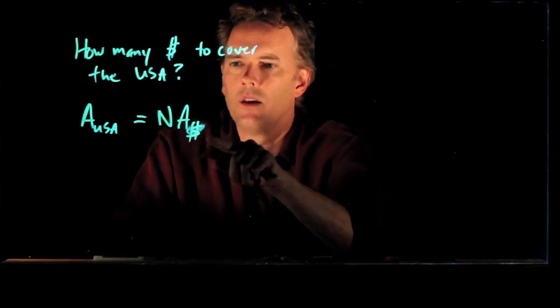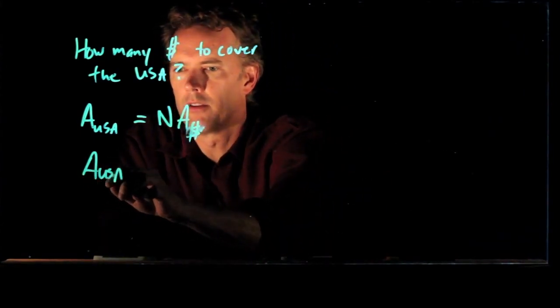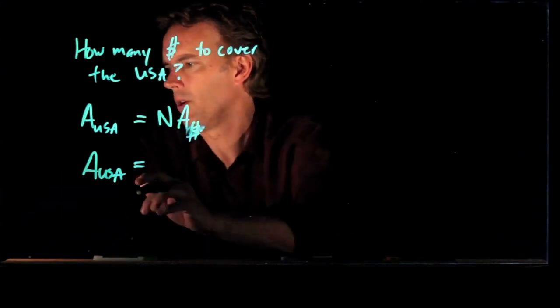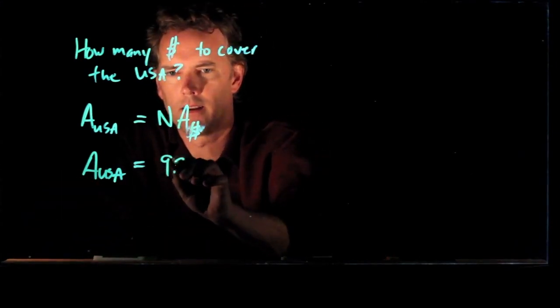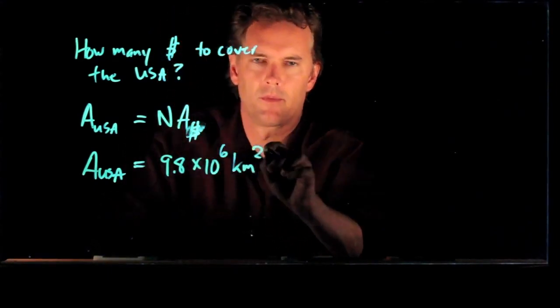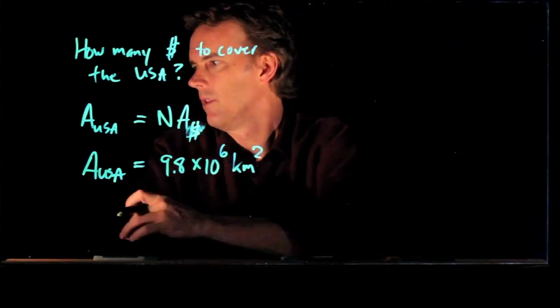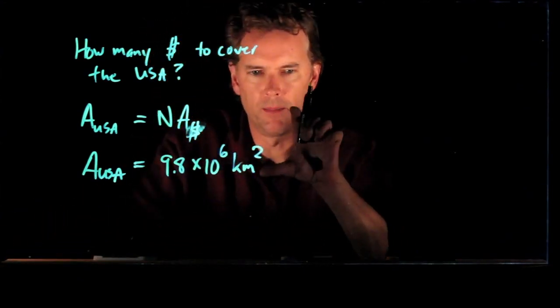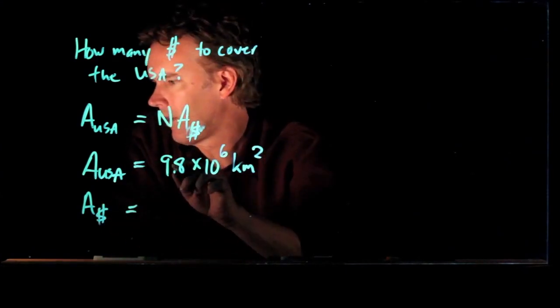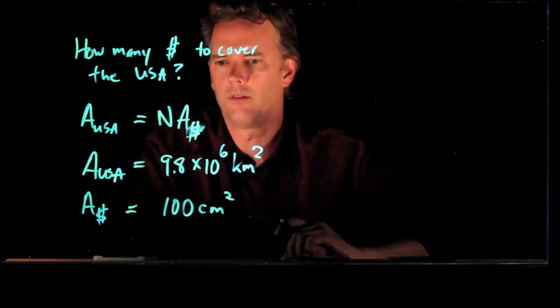Okay, so what is the area of the USA? Well, this you can just look up online, and we did that a second ago, and we got 9.8 million square kilometers. Okay, 9.8 million square kilometers. And you look up the area of a dollar bill, you know how big a dollar bill is. What's the area of a dollar bill? It is around approximately 100 square centimeters.